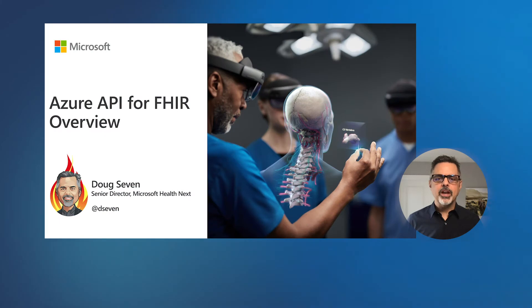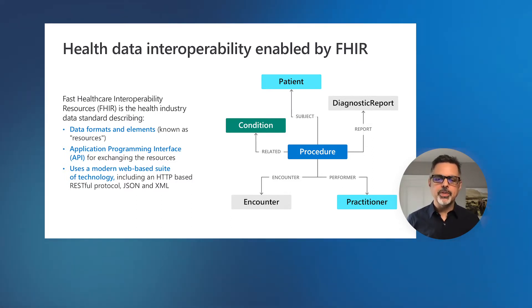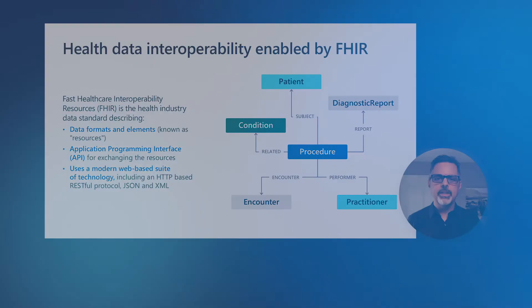In this video, we're going to talk about the Azure API for FHIR, which is an Azure service that implements the FHIR specification. As we discussed in the previous video, FHIR is really the definition of a set of data elements known as resources. Some of the examples we discussed before were patient, condition, or observation — different resource definitions that can be exchanged between systems using a set of APIs compliant with the FHIR specification. This is important because it makes this data available in a common and standard format, regardless of what system it's coming from.